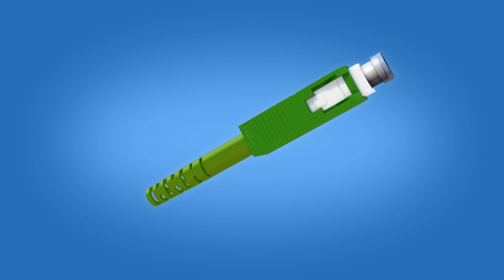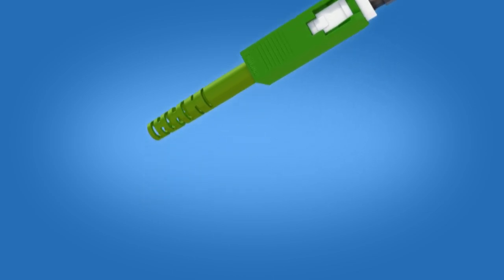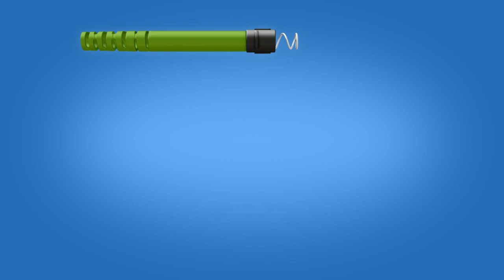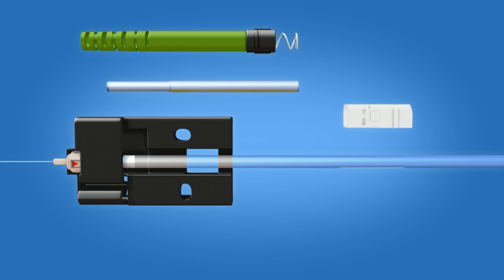The SC-APC connector includes the following materials: a boot unit, a protective sleeve, a ferrule unit, a connector body, connector housing, and a dust cap.